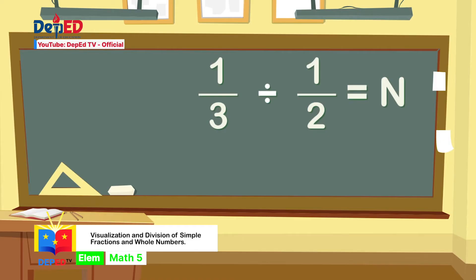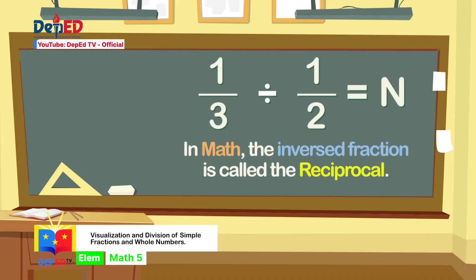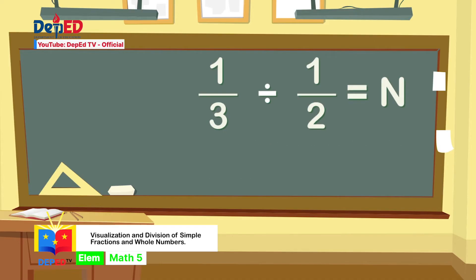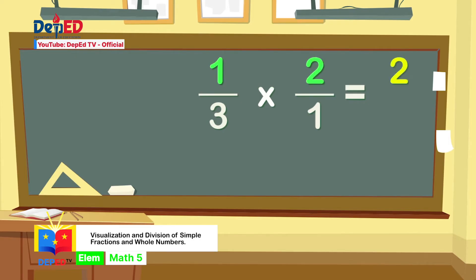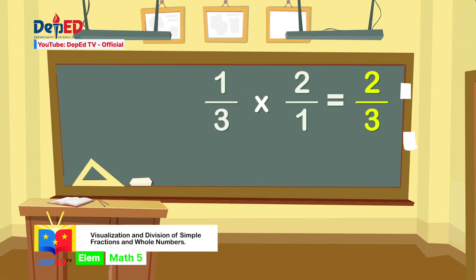To divide fractions, inverse the divisor. In math, the inverse fraction is called the reciprocal. Since we inverse the divisor, one-half now becomes 2 over 1. Then, change the operation to multiplication and multiply the dividend by the divisor. So that gives us a new equation: 1 third times 2 over 1 equals n. We can multiply directly: 1 times 2 equals 2 and 3 times 1 equals 3. Our final answer is 2 thirds.